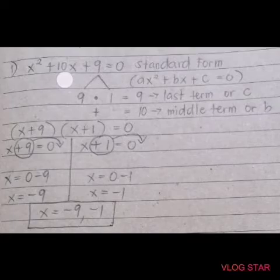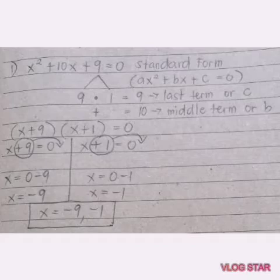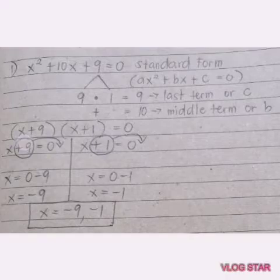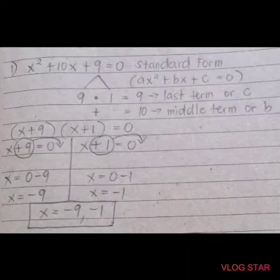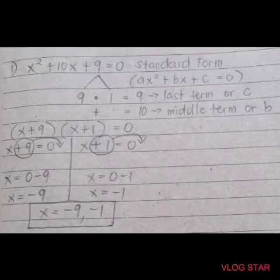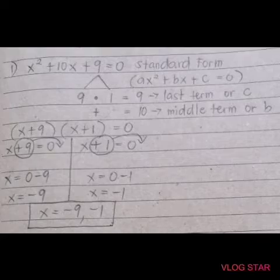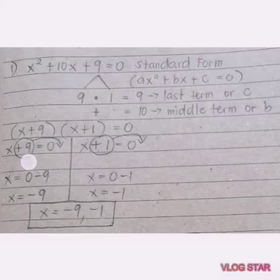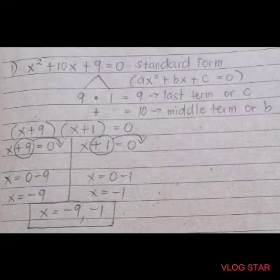The middle term, or b, is 10. That's why the factors 9 and 1 are correct. Now, take the square root of x squared, which is x. So we get x plus 9 times x plus 1 equals 0. Equating each factor to 0: x plus 9 equals 0 and x plus 1 equals 0. Transpose positive 9 to the right side — it becomes negative 9.